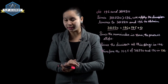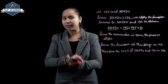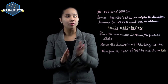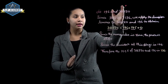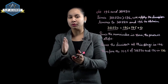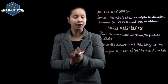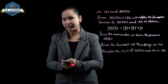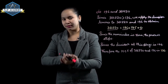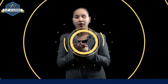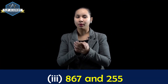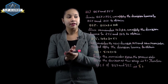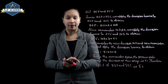Since the divisor at this stage is 196, the highest common factor of 196 and 38,220 is 196. Second part is complete.